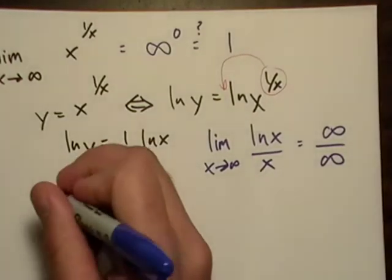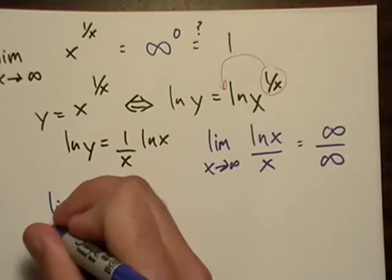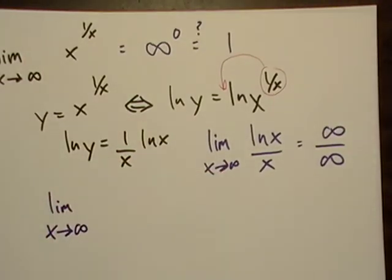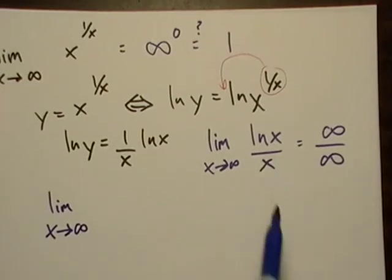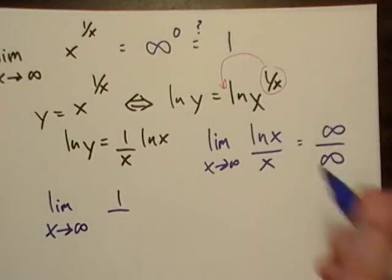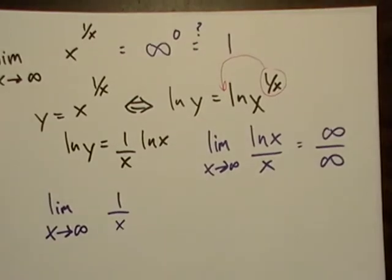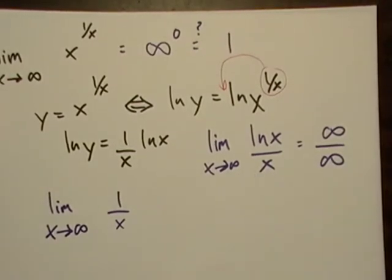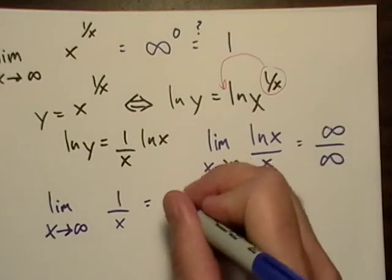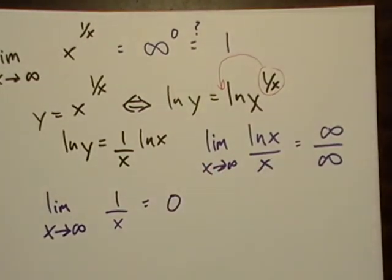Okay, so let's take this a little further down. We're just going to apply L'Hopital's rule again. Derivative of the natural logarithm is 1 over X, and a derivative of X is just 1. So what happens? This just approaches 0.